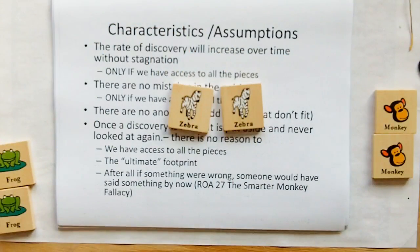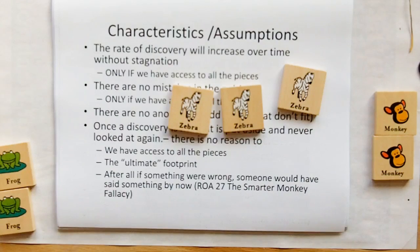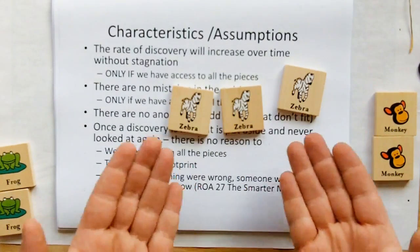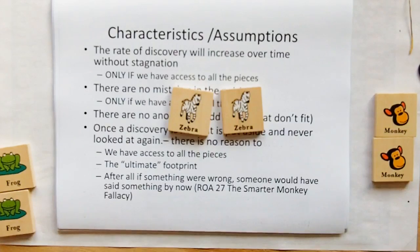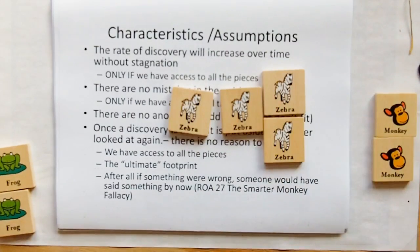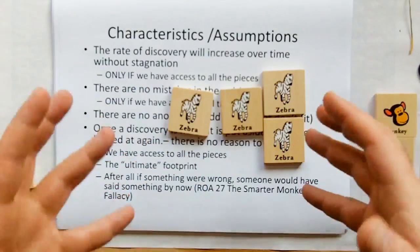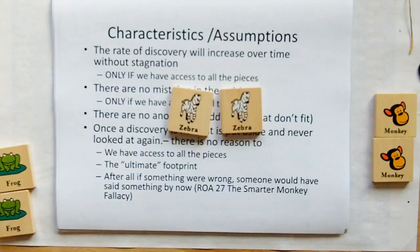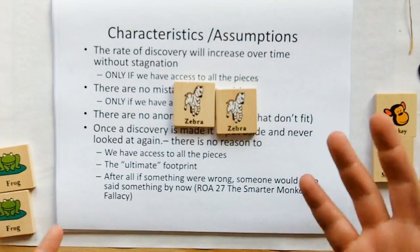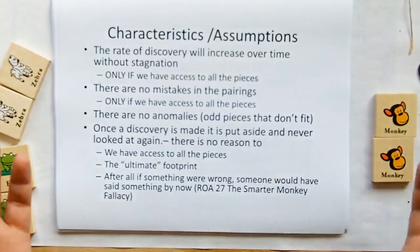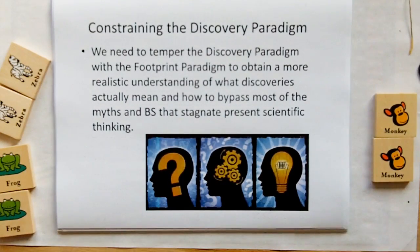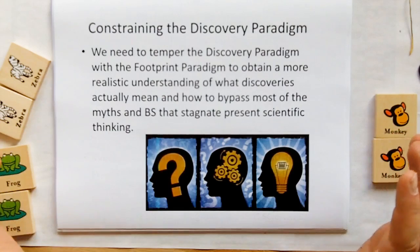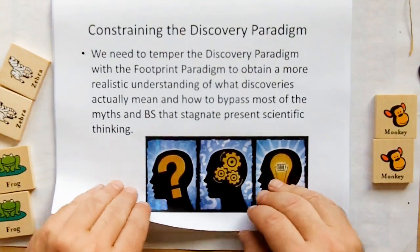Had we made a false mistake — say there was a third matching piece — we'd have an ambiguity. How do we resolve this? Because we believe we have access to all the pieces, we assume these things are the same. But we need to constrain the discovery paradigm with the footprint paradigm to obtain a more realistic understanding of what really goes on, and that way we can bypass the myths and the stagnation in present scientific thinking.